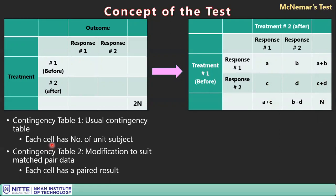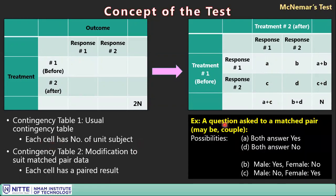As an illustration, consider a matched pair: a husband and wife asked the same question separately. Both may answer yes or no. The four combinations are: both say yes (cell a), both say no (cell d), one says yes and the other no (cell b), and the reverse (cell c).